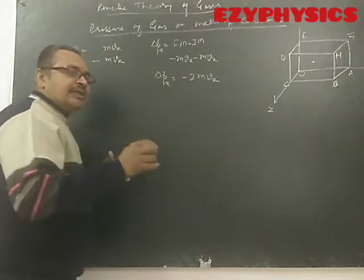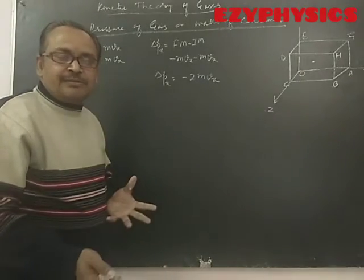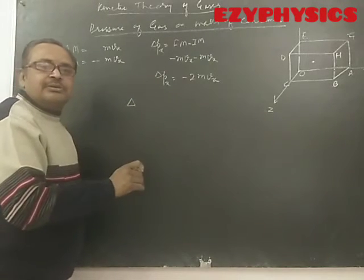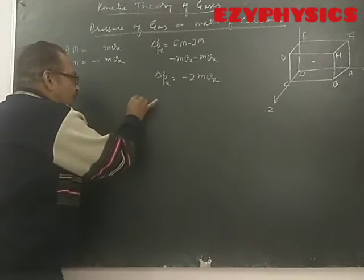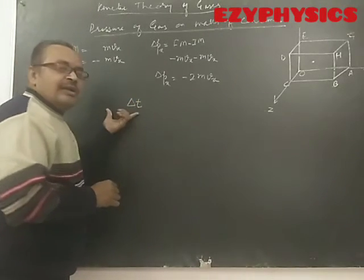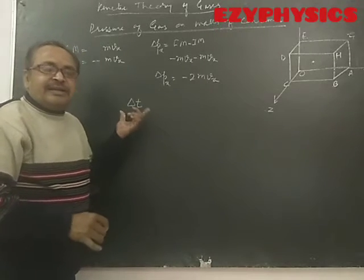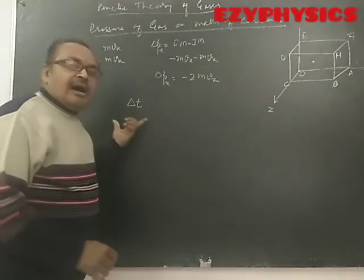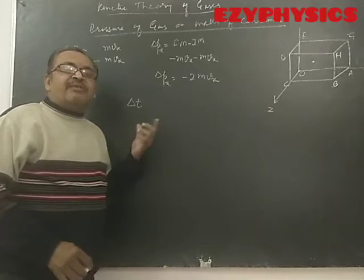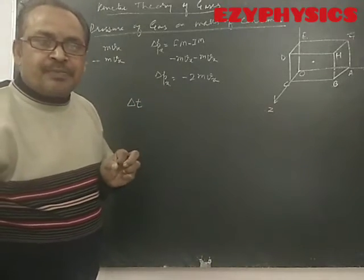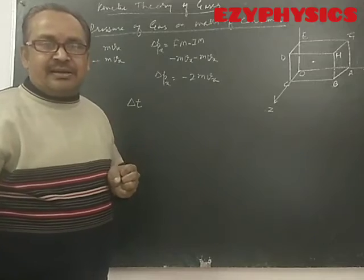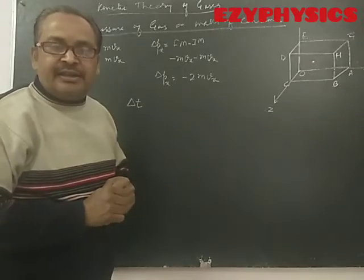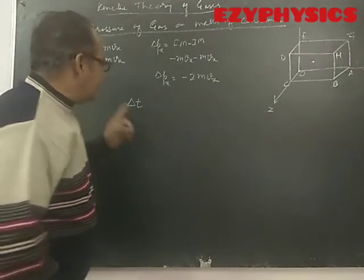Now this is not only one particle — there will be many particles. So we want to find out how much total momentum change occurs in a particular time delta T. First, we will try to find out how many particles are hitting the wall ABHG in time delta T.